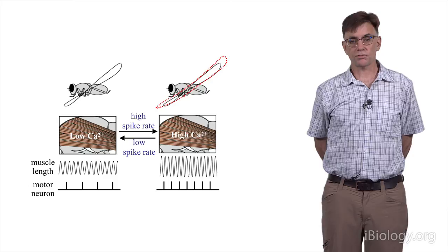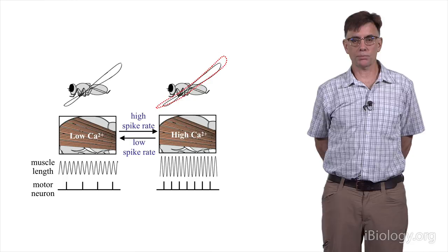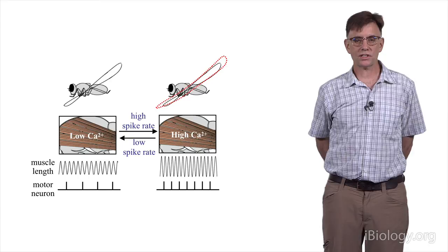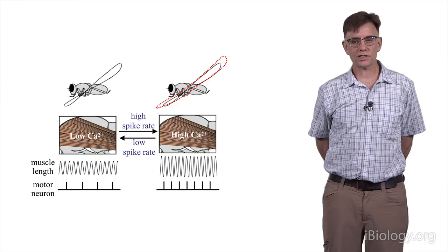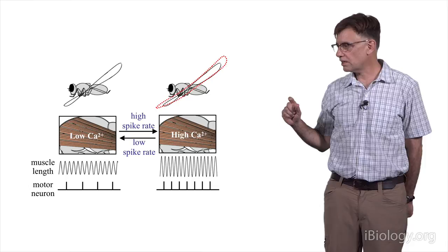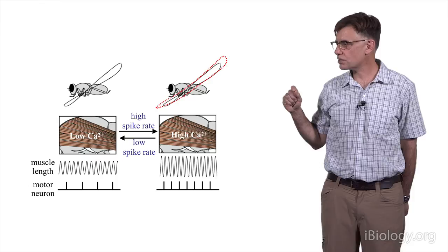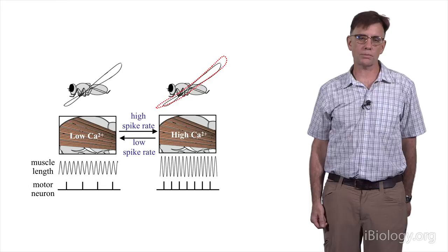Even though the power muscles of flies are stretch-activated and activate each other, the nervous system can still regulate things to some degree. This is done by changing the amount of calcium in the muscles. The calcium determines the stretch-activation state of the muscles. By activating the muscles at a slightly higher frequency, you produce a muscle that is more actively stretch-activated. With less calcium in the muscle, the muscle is slightly less stretch-activated. This functions something like a throttle that the insect can use to power up or power down during flight.